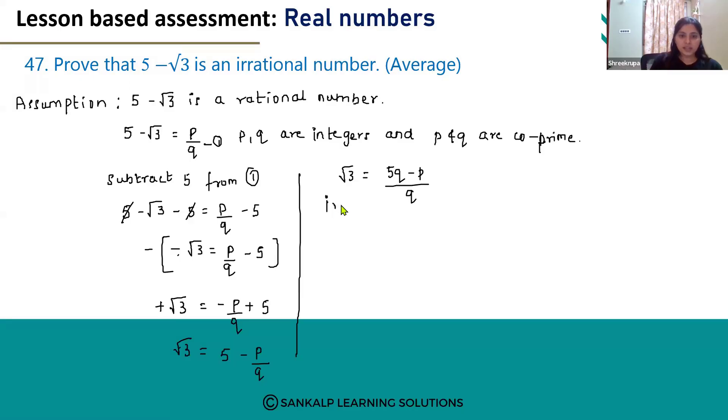This root 3 is an irrational number, but this is a rational number. But if you look at this, irrational is equal to rational is what we get here.